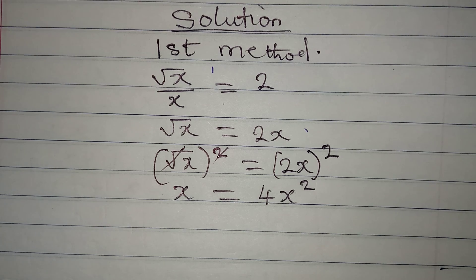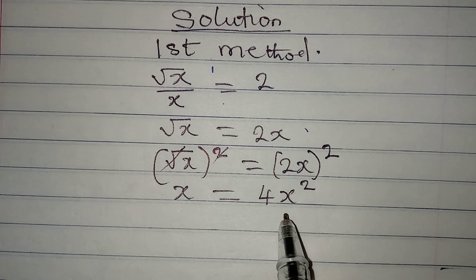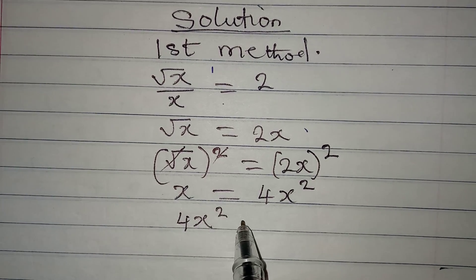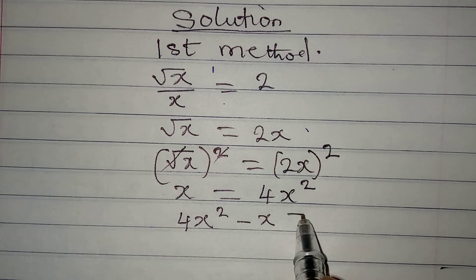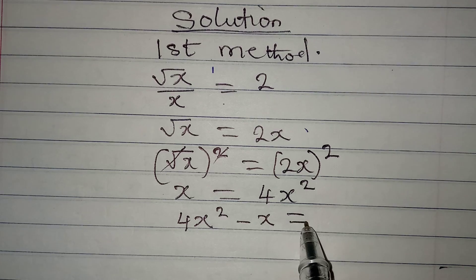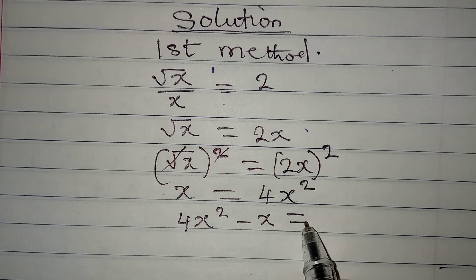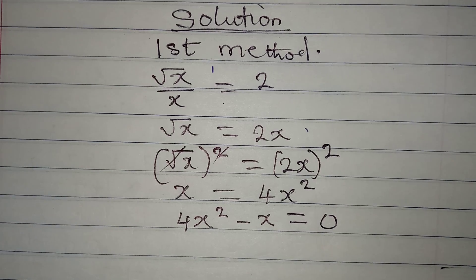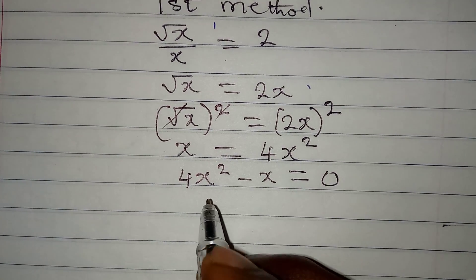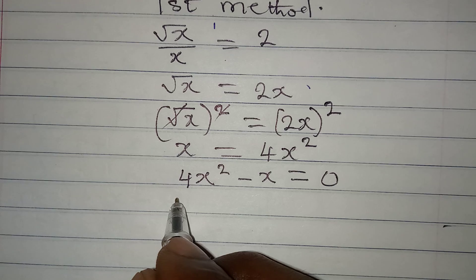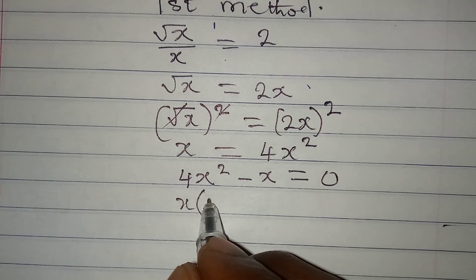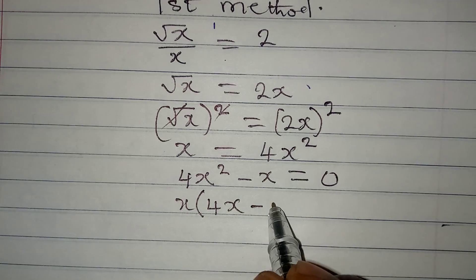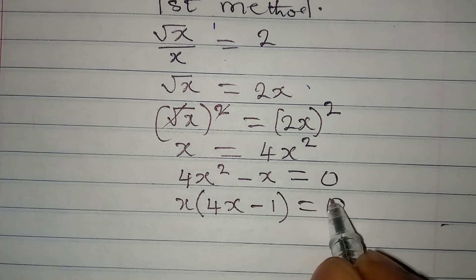So from here, what do we do next? Remember that we have 4x squared minus x, and this is going to be equal to 0, because we brought everything to the same side. Now x is a common factor — bring it out. Here we have 4x, then minus x divided by x is 1. This is equal to 0.